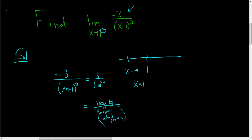Whenever you have a number divided by a super small positive, the result ends up being really, really big. But here we have a negative number, so this will be negative infinity. So the answer here is negative infinity.